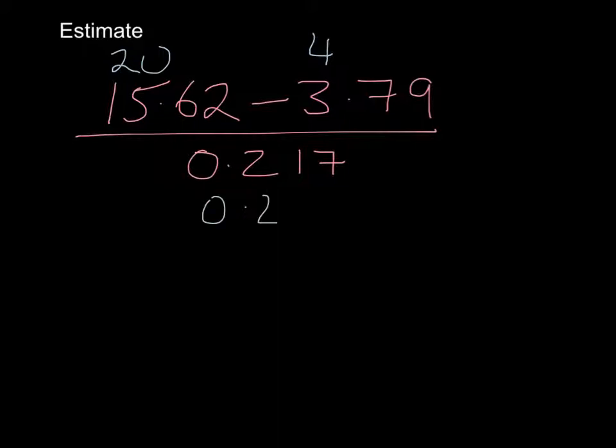So let's rewrite this question so it's tidier. So I've got 20 minus 4 divided by 0.2. So doing the top line, I get 16, and the bottom line is still 0.2.